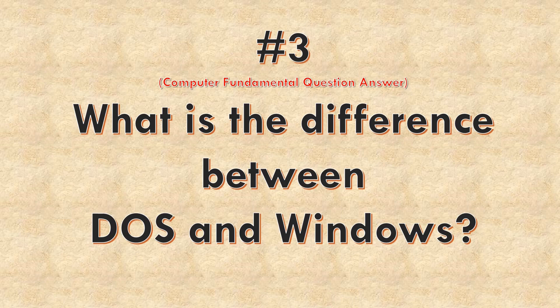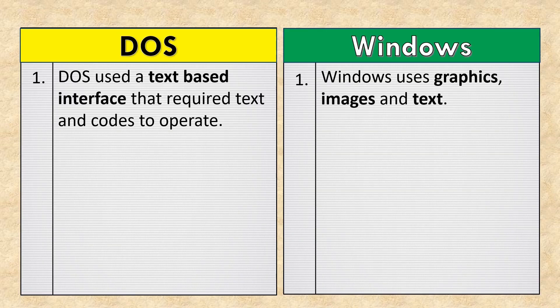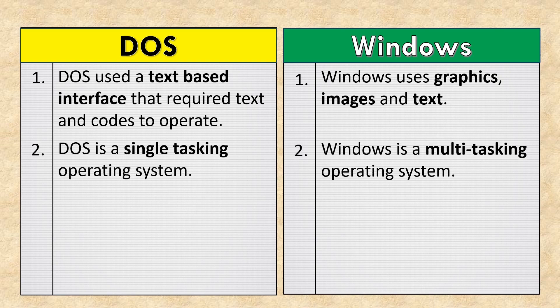Difference between DOS and Windows. DOS used a text-based interface that required text and codes to operate, while Windows uses graphics, images, and text. DOS is a single-tasking operating system, whereas Windows is a multitasking operating system.